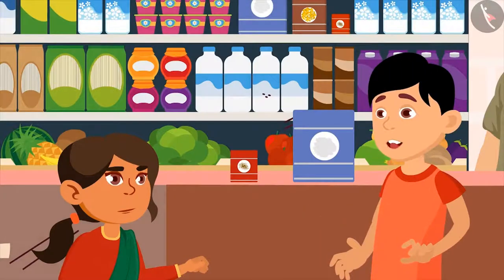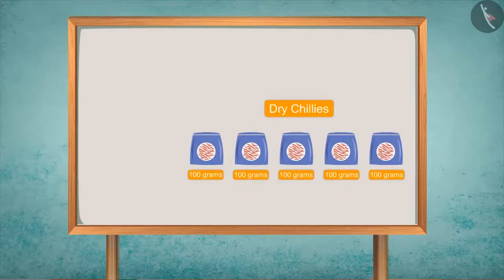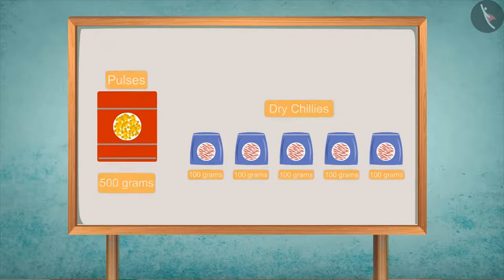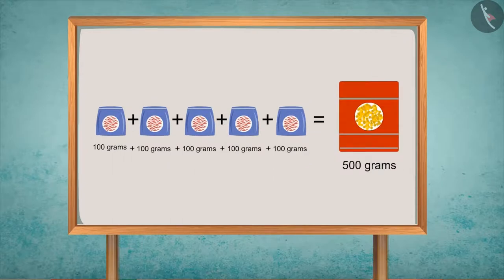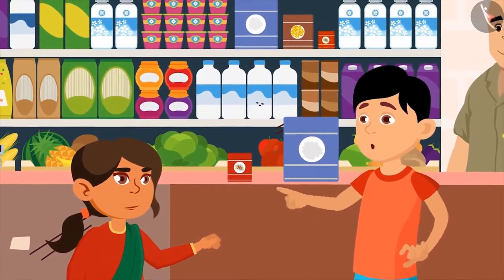Neetu, you are getting very smart! Yes brother — like this, five packets of 100 grams of dry chilies would be the same as 500 grams of pulses. You said it right — dry chilies are lighter than pulses, so five packets of 100 grams of dry chilies is equivalent to one packet of 500 grams of pulses. On adding five packets of 100 grams, we get 500 grams, that is why both of them are equal.